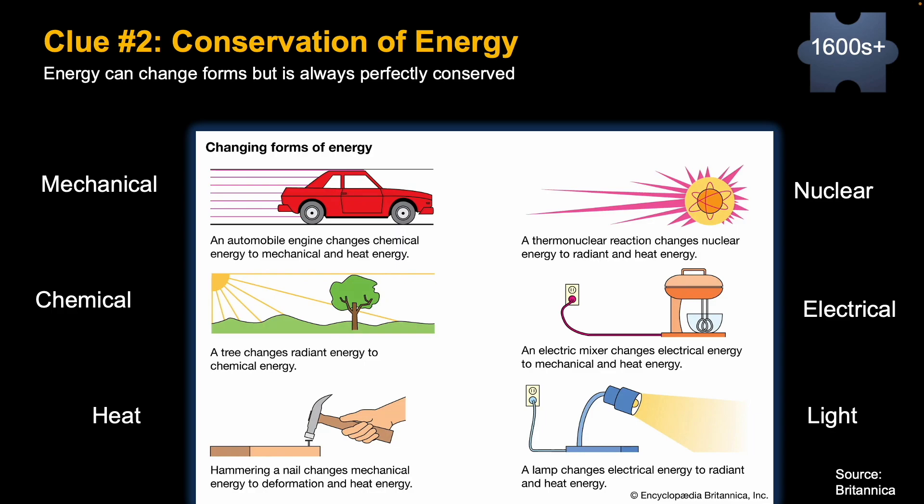Some of these forms that have evolved over the last four centuries: mechanical energy, chemical energy, heat, nuclear energy, electrical, and light, to name a few. We'll show more examples of this in a few slides from now. But the key thing is that energy can change forms but it's always perfectly conserved.